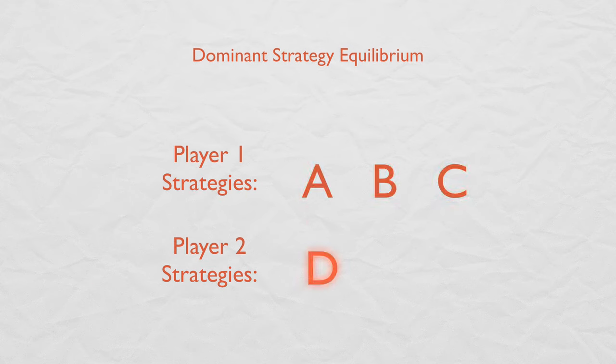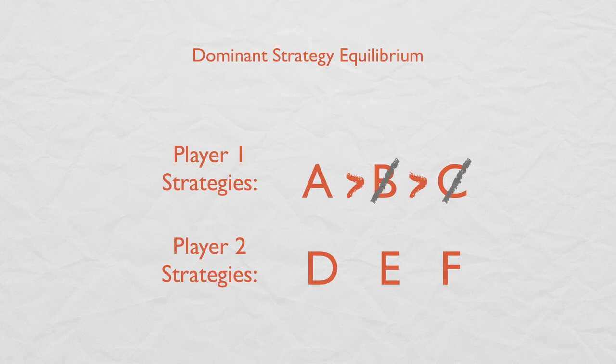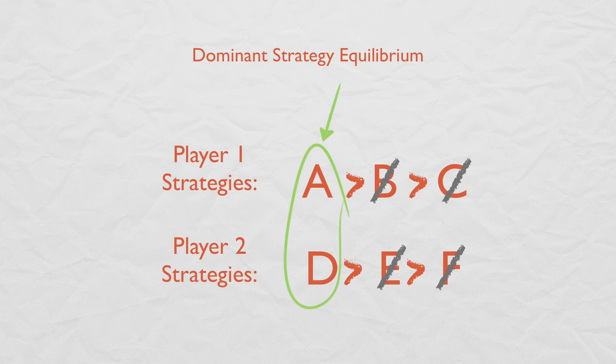One strategy strictly dominates another strategy if the player is always better off under that strategy no matter what other players do. If one strategy strictly dominates every other possible strategy a player could take, that strategy is a strictly dominant strategy. We have a Dominant Strategy Equilibrium when all players play a strictly dominant strategy.